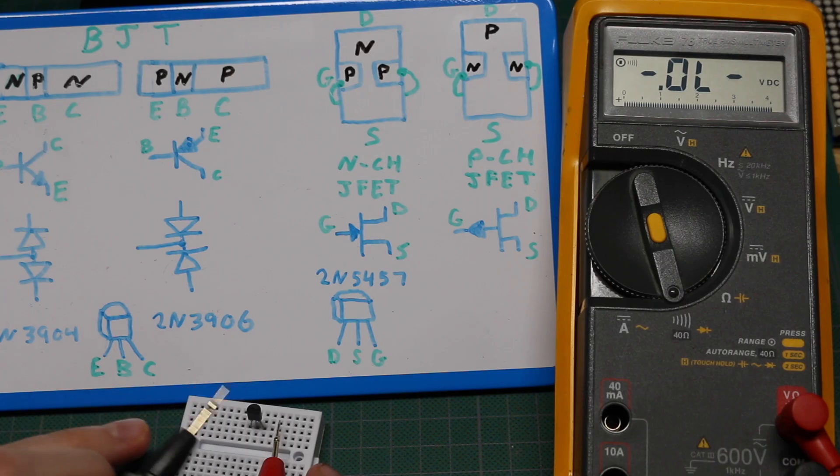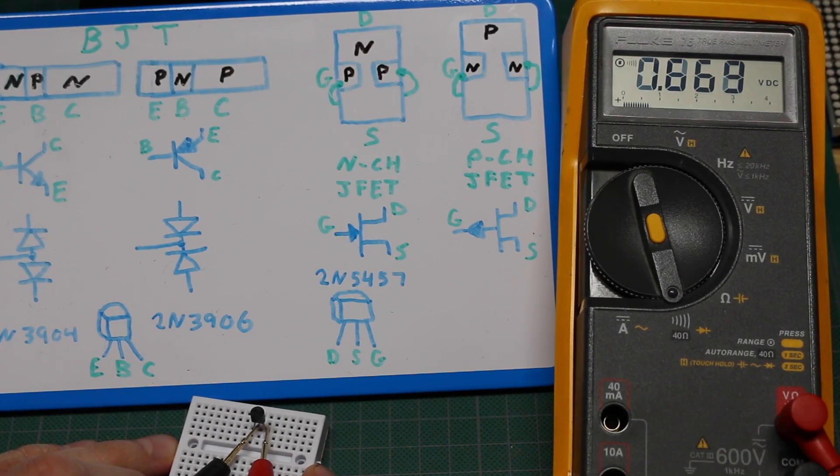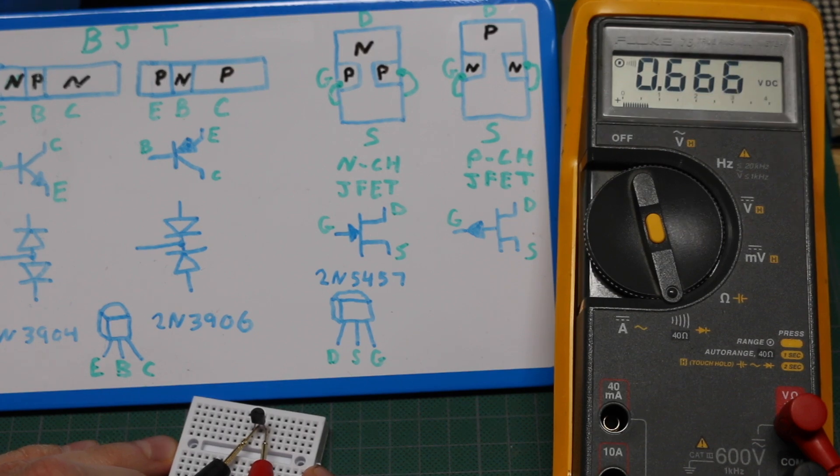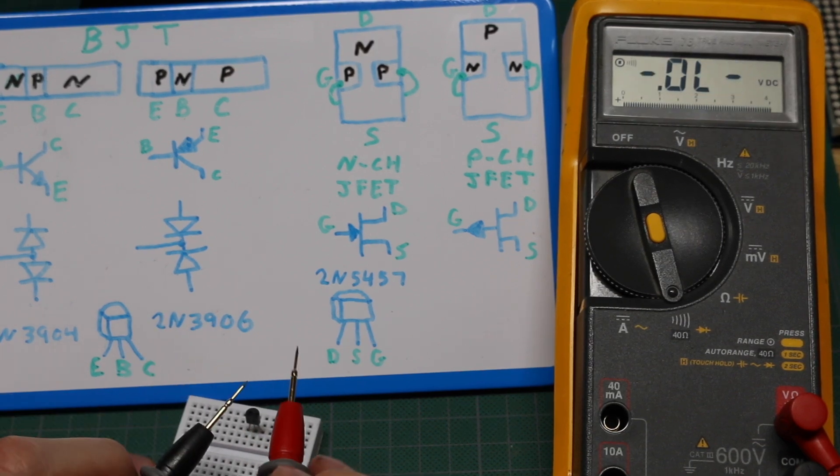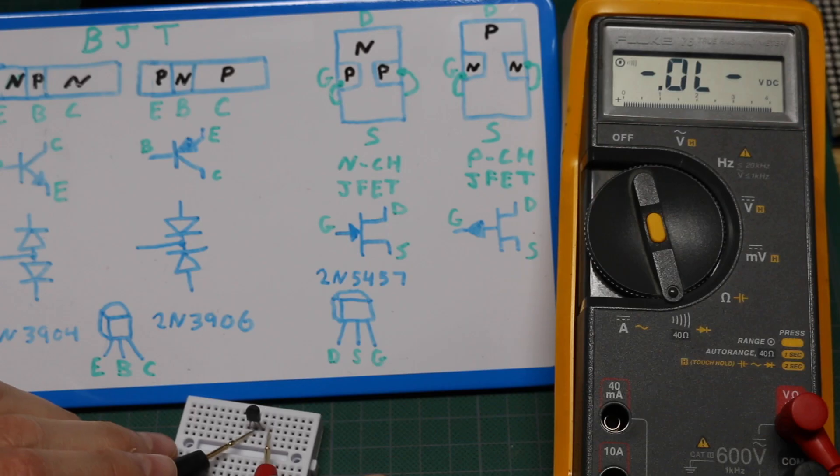And now just move the negative to the middle pin and check the last pin with positive. Okay, so I have a diode drop, middle negative, right positive. So one of these has to be the base, and the other is either emitter or collector.